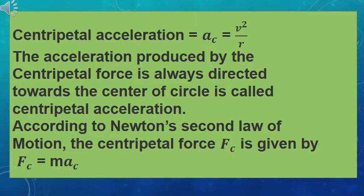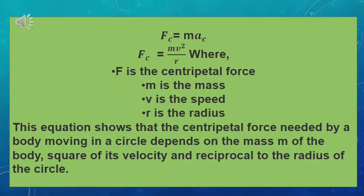According to Newton's second law of motion, the centripetal force FC is given by F equals MA. So the centripetal force uses centripetal acceleration: FC equals MA. Since AC equals V squared over R, the formula of centripetal force becomes FC equals MV squared over R.